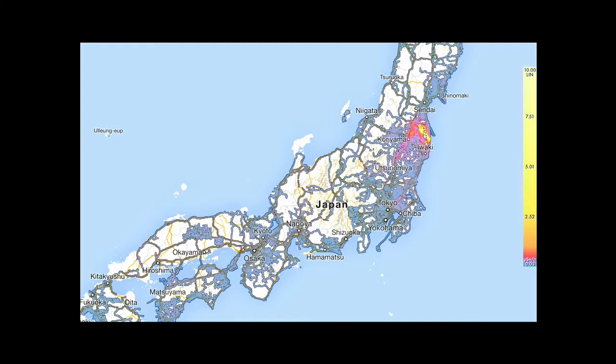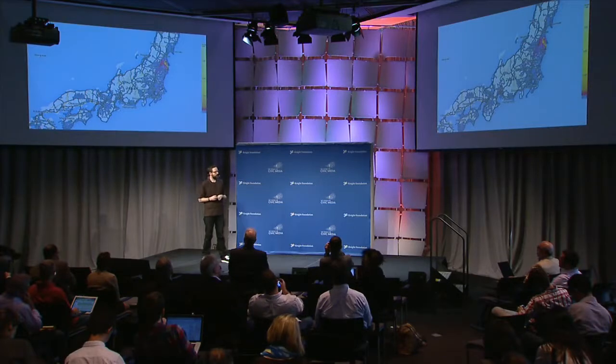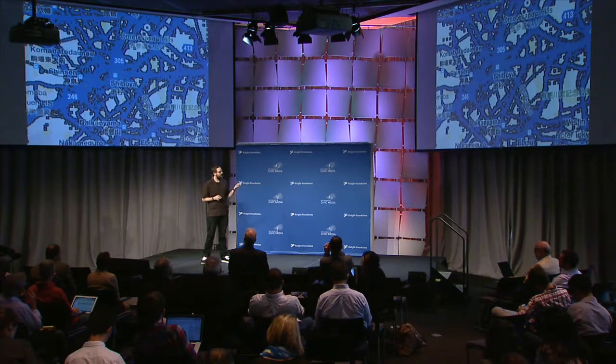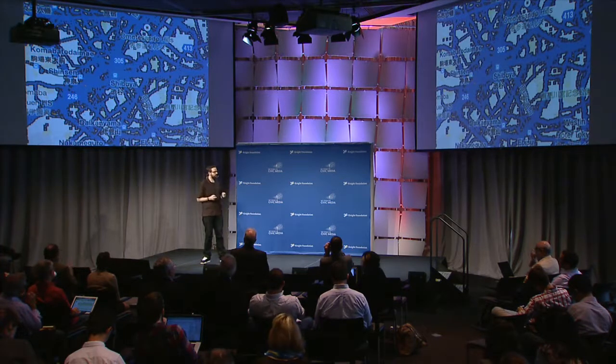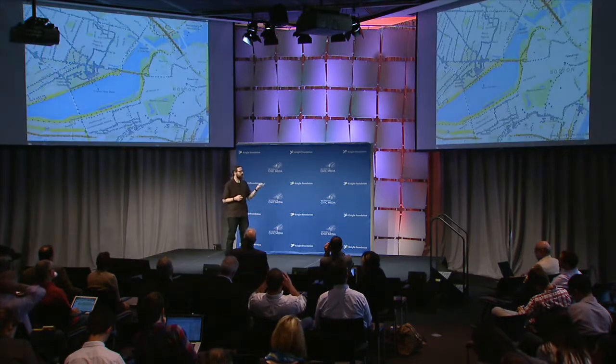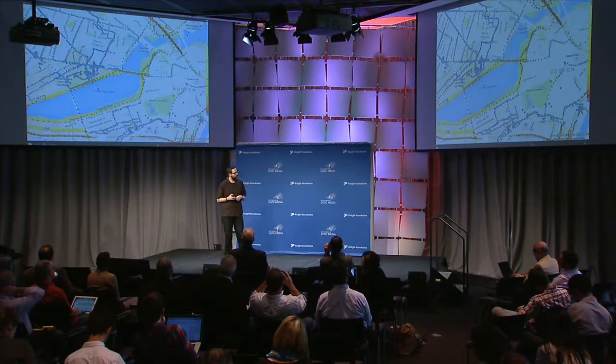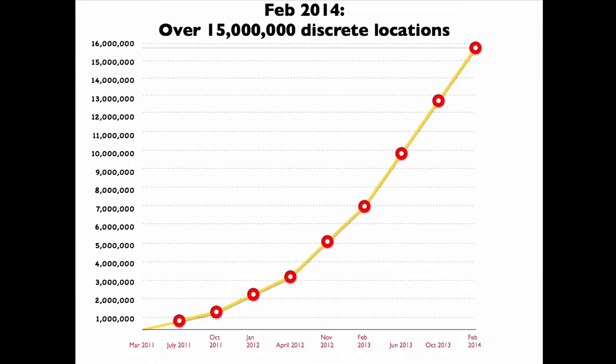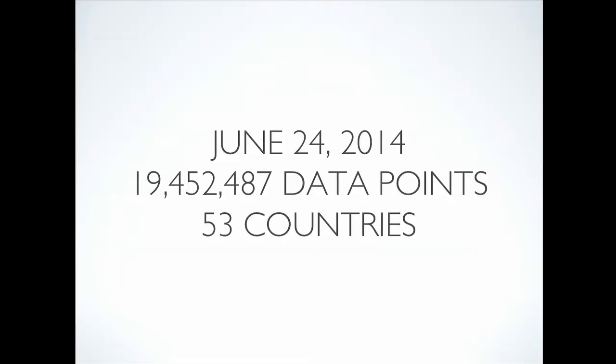We actually published data immediately that showed the evacuation areas were wrong — they had to change where people were being moved to and from because of this. The data we're collecting now goes all the way down to street level, as opposed to the huge averages that existed before. We can get data all the way down to an individual GPS point anywhere in the world where we have devices. We started with zero data, and now we're just shy of 20 million data points in 53 countries — the largest open radiation dataset available anywhere.